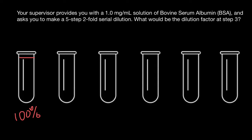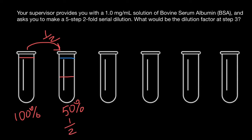We take half of it — so this is going to be our first step, one half — and the rest we dilute with water. It can be any other solvent, but in most cases this is water. So this is going to be a 50% solution, or we can also say one half. This was step number one.